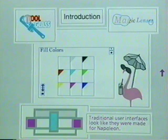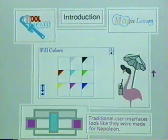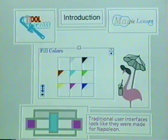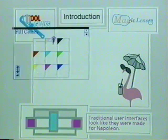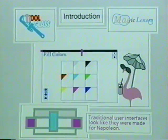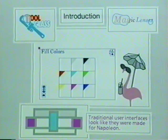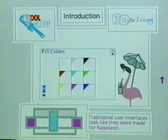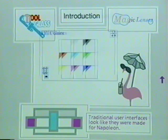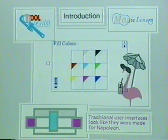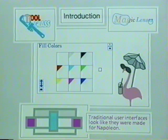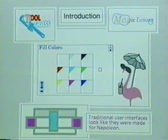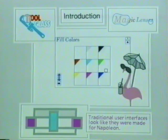Tool glass is a movable transparent control panel that appears above application windows. We can move a sheet of tool glass in two ways: by dragging it with the mouse or with the trackball. Using both input devices we can move a tool glass sheet and the mouse cursor simultaneously. A transparent control panel enables new kinds of user interface tools.